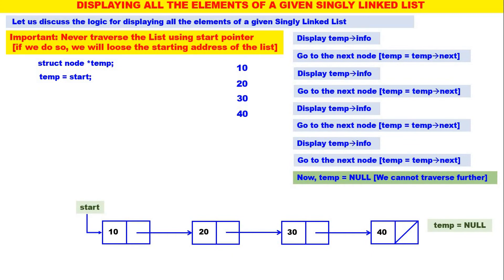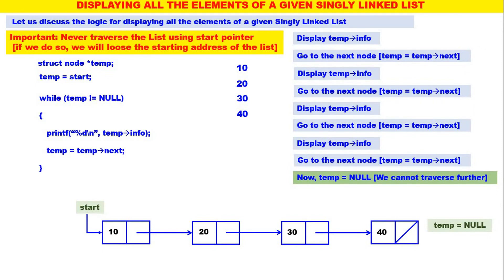Now when did we stop? When temp is equal to null, we stopped. When did we continue? When temp is not equal to null, we continued. Therefore the while loop: while temp is not equal to null, what did we do? We displayed temp of info, then we moved temp — temp is equal to temp of next — to the next node. That's all. Very simple logic.